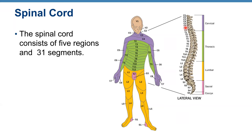The spinal cord is divided into 31 segments, and there is a pair of spinal nerves arising from each segment. Spinal nerves from the cervical segment innervate the neck and upper extremity; from thoracic, they innervate the torso; from the lumbar region, they innervate the lower limbs; and from sacral and coccyx, we have innervation of the groin and some parts of the legs.